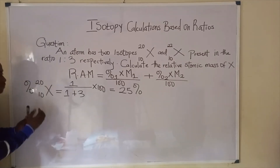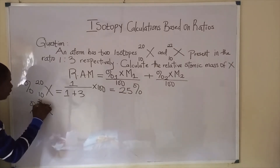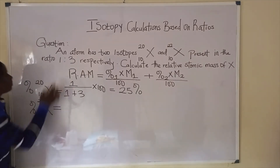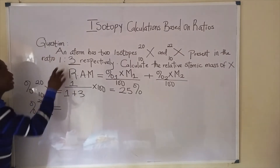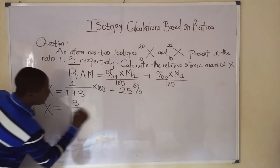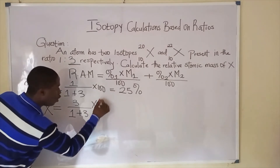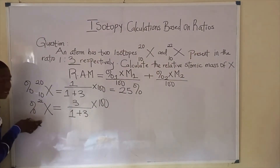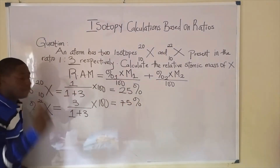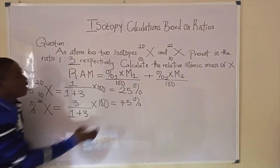Now let's go ahead and determine the percentage abundance of the second isotope. The percentage abundance of the second isotope x22 — the value for the second isotope is 3, so we bring it up as the numerator, dividing by the addition of both ratio values, which is 1 plus 3, times 100, since we are asked to get percentage. When we calculate, we get 75%. These are the percentage abundances of both isotopes.